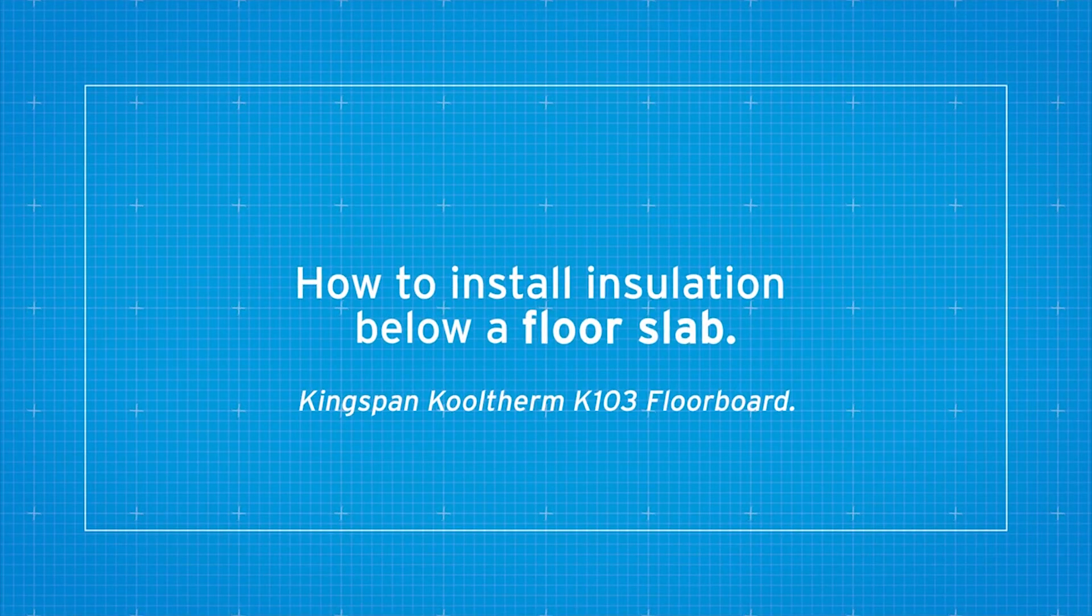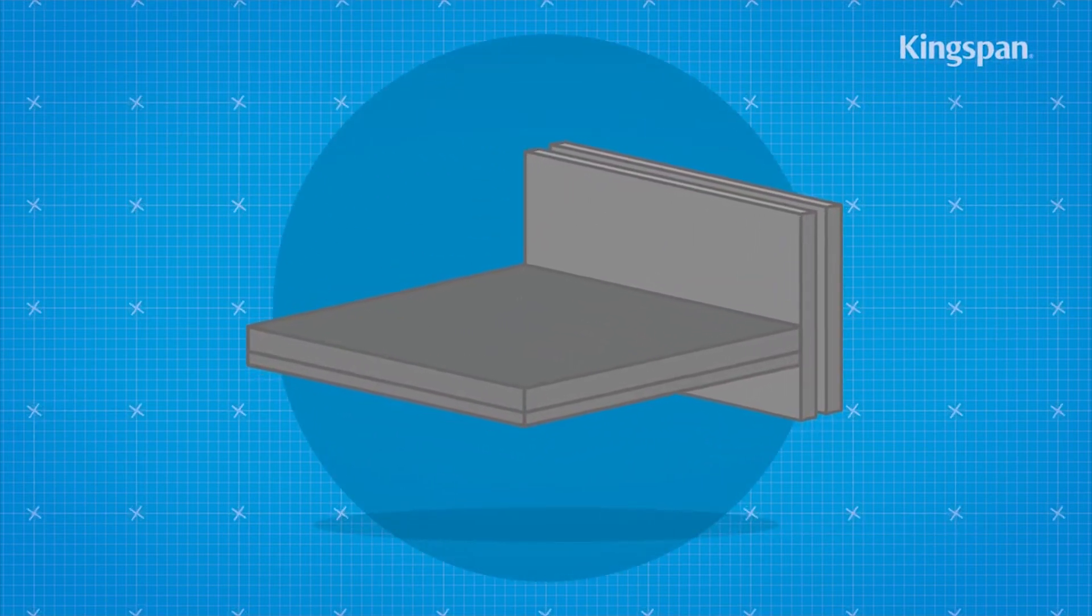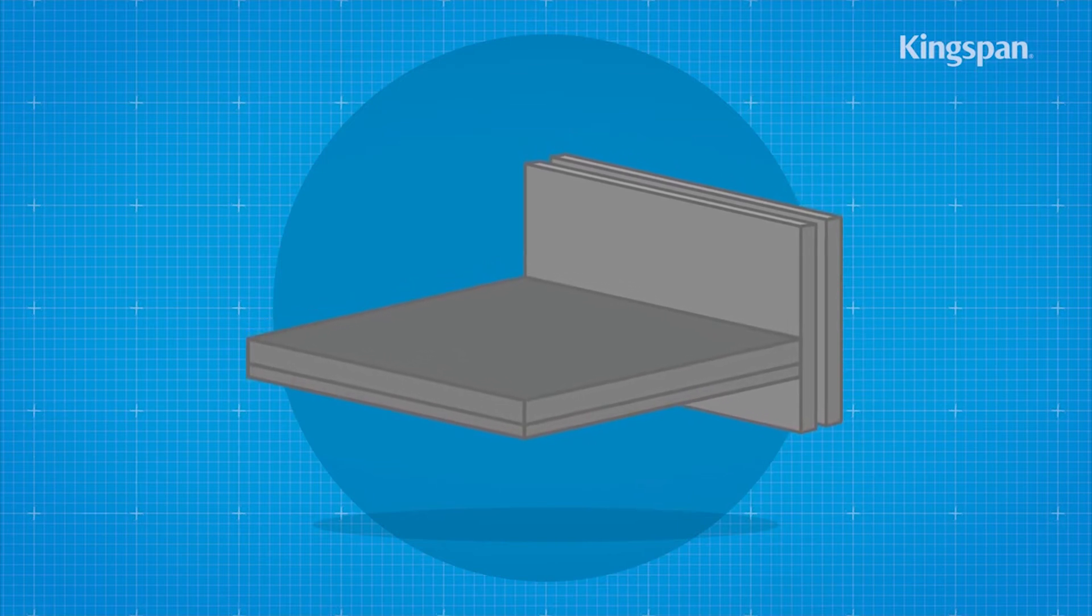How to install insulation below a floor slab. The site should be prepared and where appropriate, the foundations should be built up to the level of the wall damp-proof course.